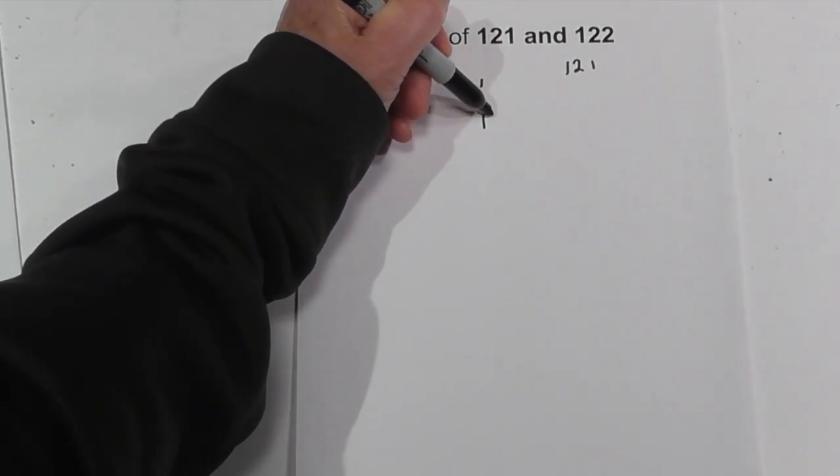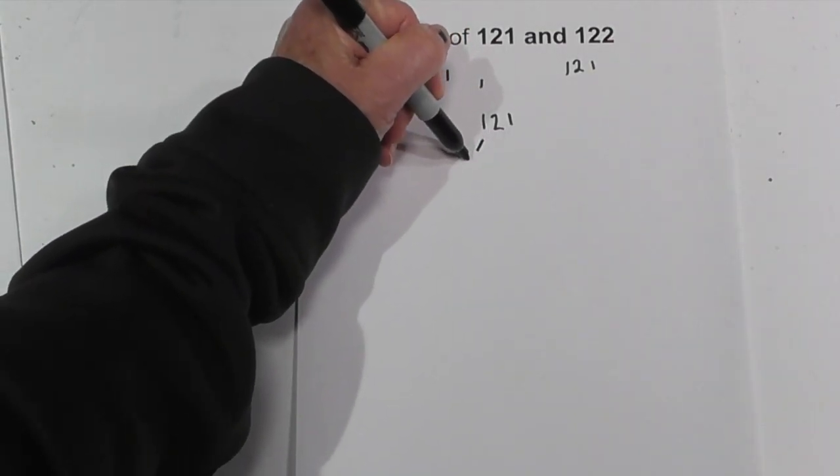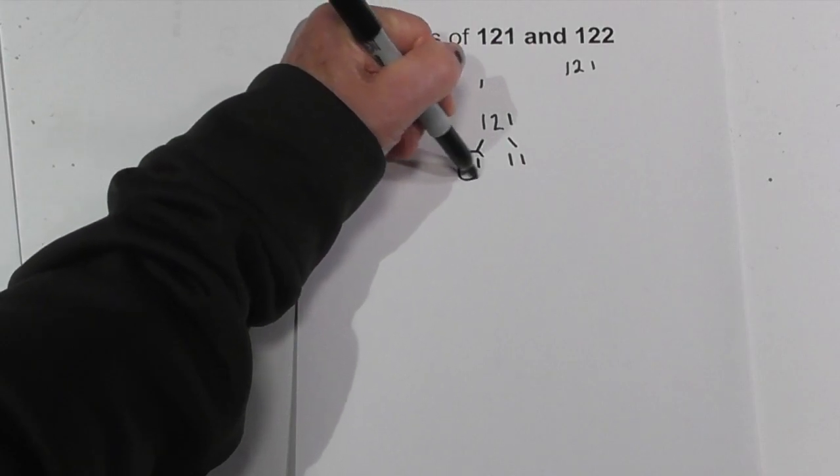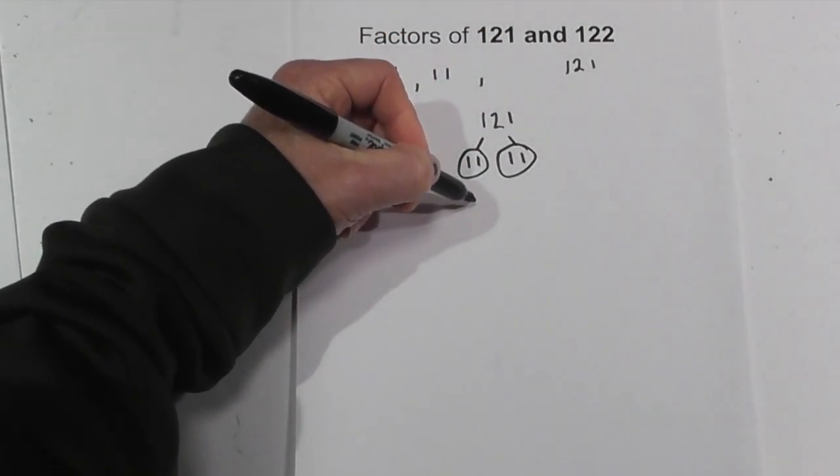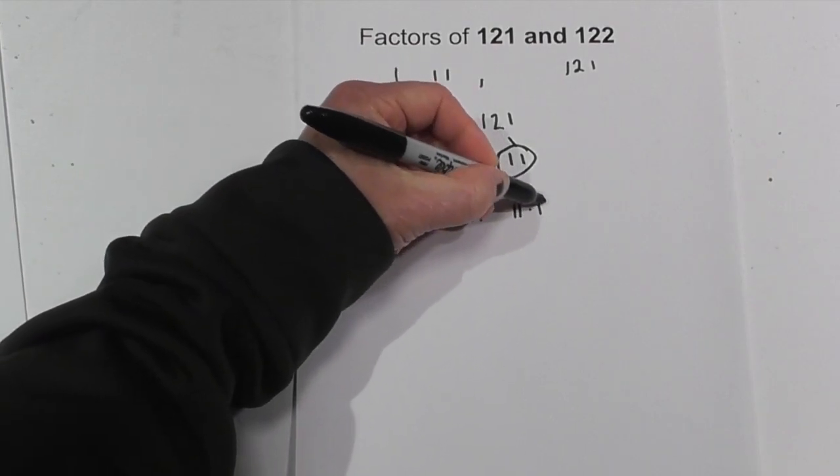Now, if you want to find the prime factors of 121, you can create a factor tree and it is 11 times 11. Circle both of these because they are prime. So the prime factors of 121 are 11 squared or 11 times 11.